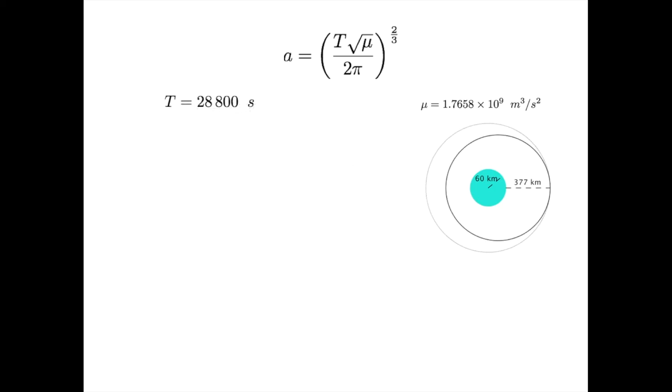Now for the phasing orbit. Recall it needs to have a period that is two-thirds of the final period, which is 8 hours, or 28,800 seconds, and have an apoapsis equal to the altitude of the final orbit. All we need to work out is the periapsis.